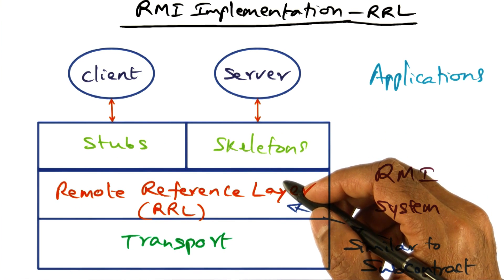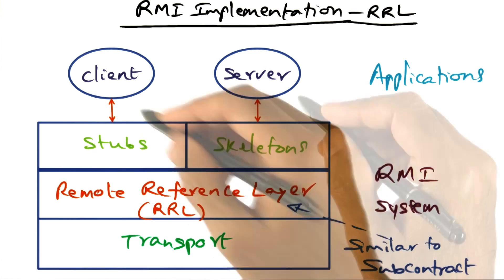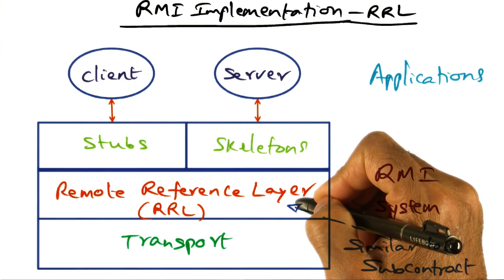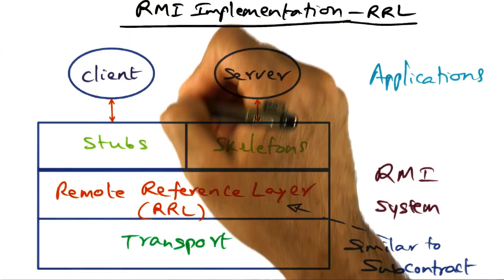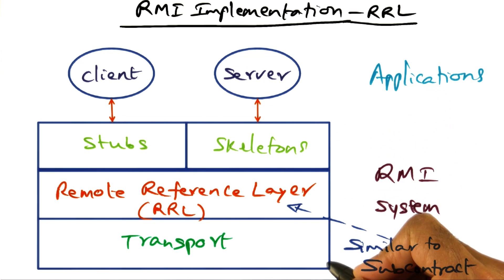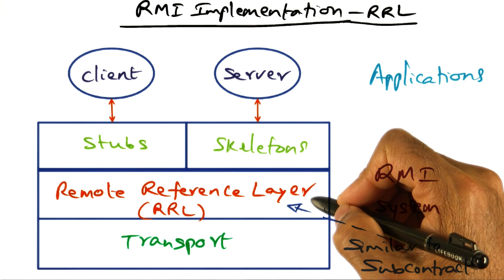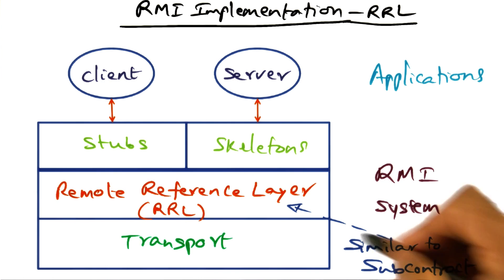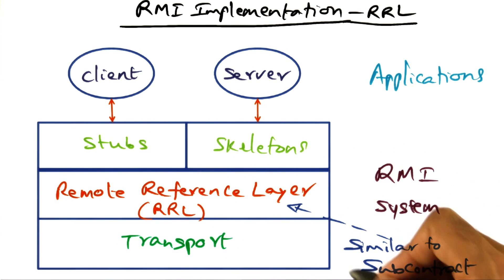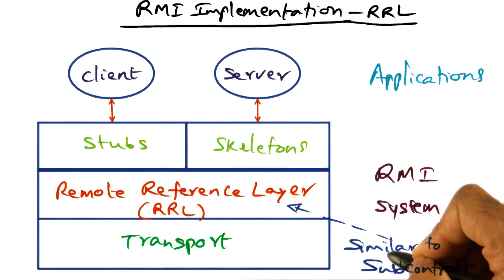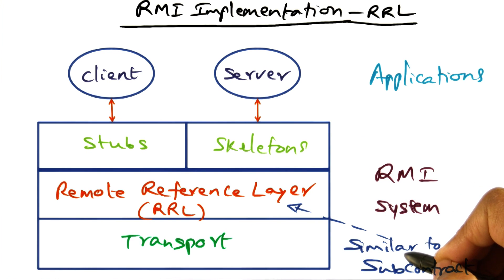This allows for various invocation protocols between the client and the servers, and all of those things are buried in the remote reference layer, so the actual clients and servers can be impervious to those details. In the Java runtime stack, the RRL layer is a very crucial layer, and it has functionalities very similar to the subcontract mechanism in the Spring system. Java RMI derives a lot from the subcontract mechanism, so there is not much surprise that there are similarities between the RRL layer and the subcontract mechanism.